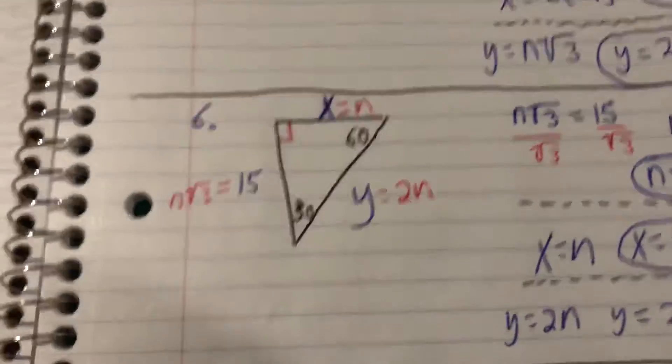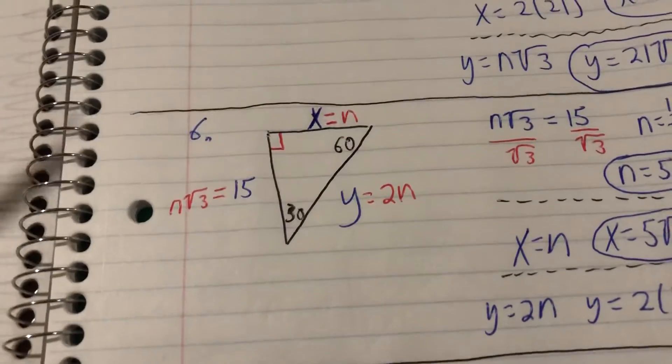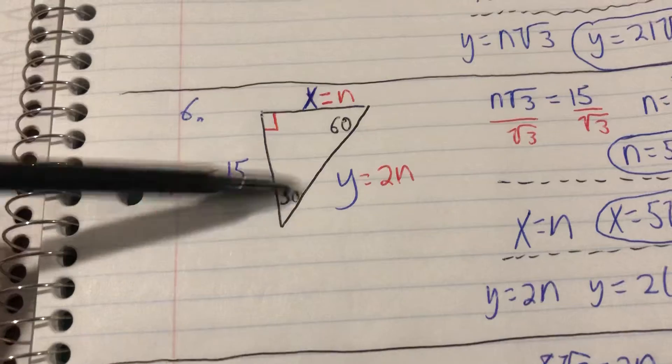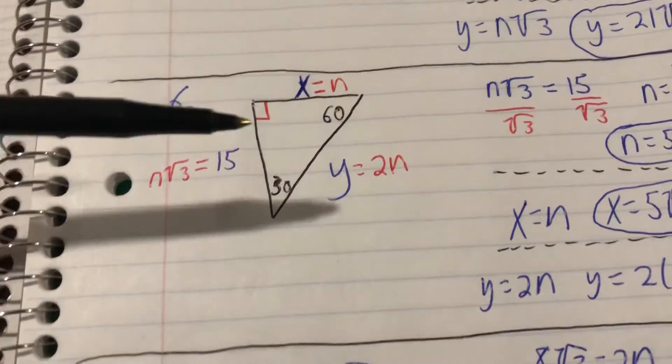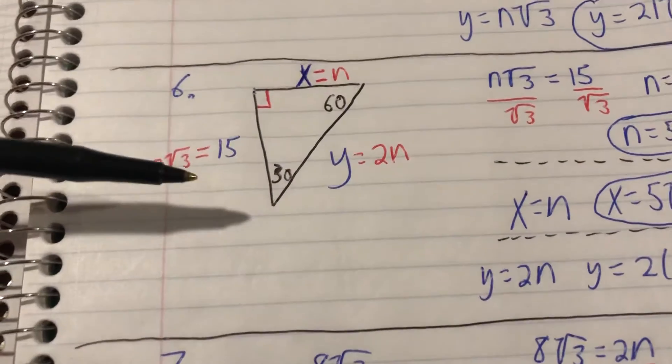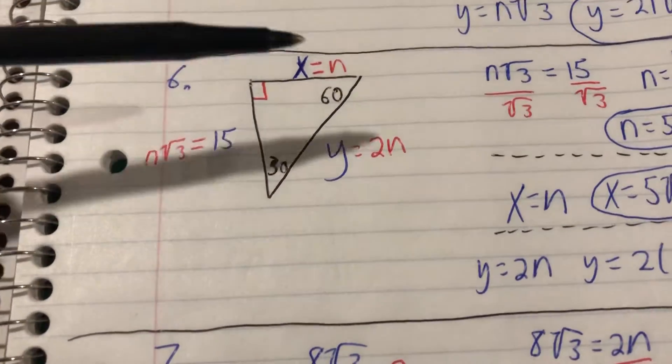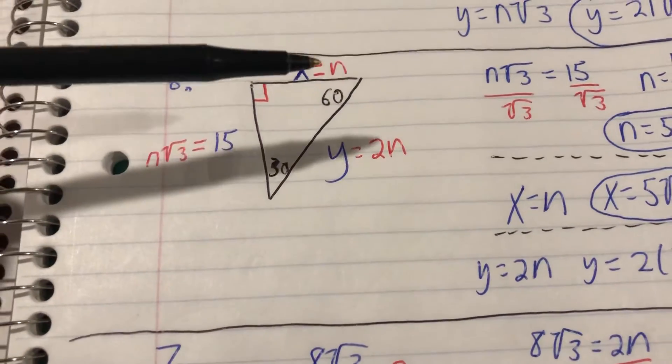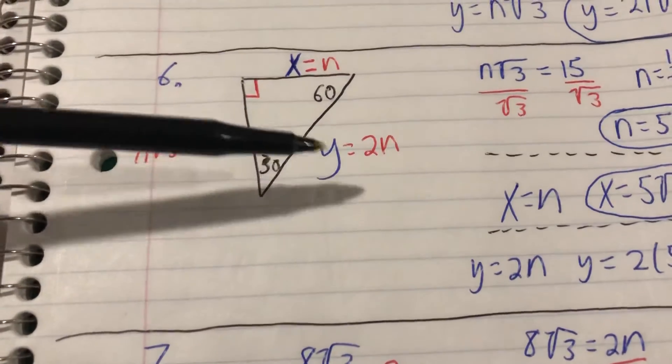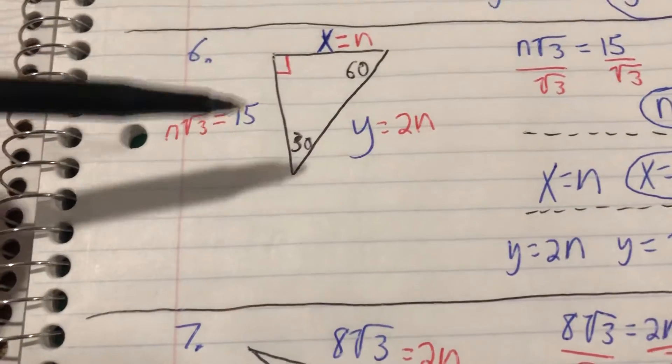Looking at number 6, this is another 30-60-90. On this one they didn't give us the 30 degrees there, but you can use the triangle angle sum to figure out there's 30 degrees left for this angle. So this time around we were given the side opposite from 60. We're going to label like we normally do: opposite from 30 is equal to n, opposite from 60 is equal to n√3, and opposite from 90 is equal to 2n. Looking at the side we were given, 15, it's equal to n√3. We have to solve for n there.